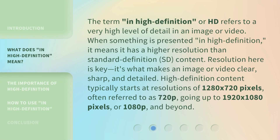The term in high definition, or HD, refers to a very high level of detail in an image or video. When something is presented in high definition, it means it has a higher resolution than standard definition (SD) content. Resolution here is key — it's what makes an image or video clear, sharp, and detailed.